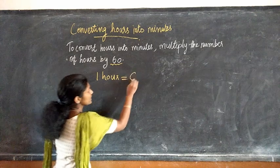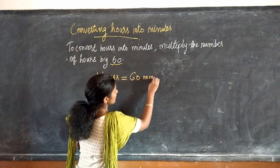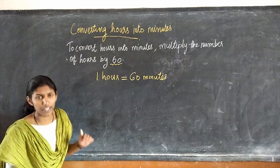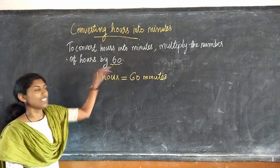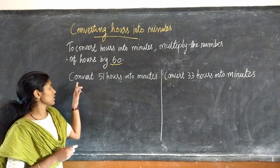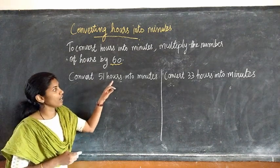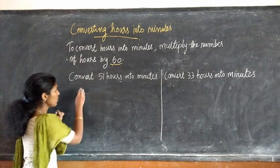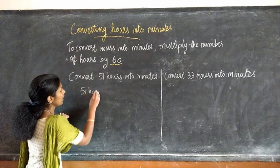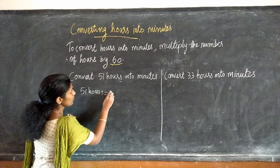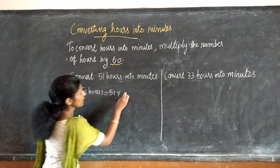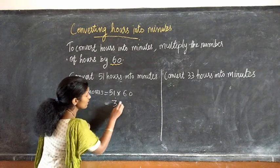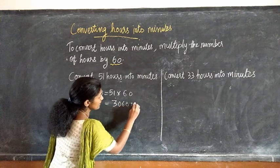That means 41 days 12 hours equal to 996 hours. Next topic: converting hours into minutes. To convert hours into minutes, we have to multiply the number of hours by 60. We know that 1 hour is equal to 60 minutes. So to convert hours into minutes, we have to multiply the number of hours by 60.